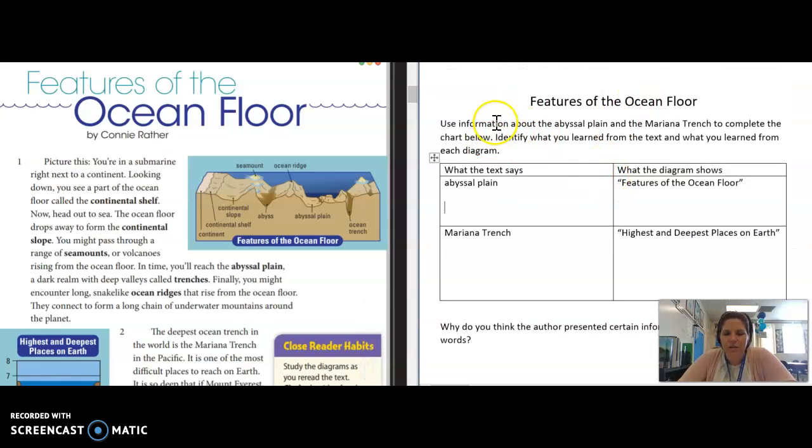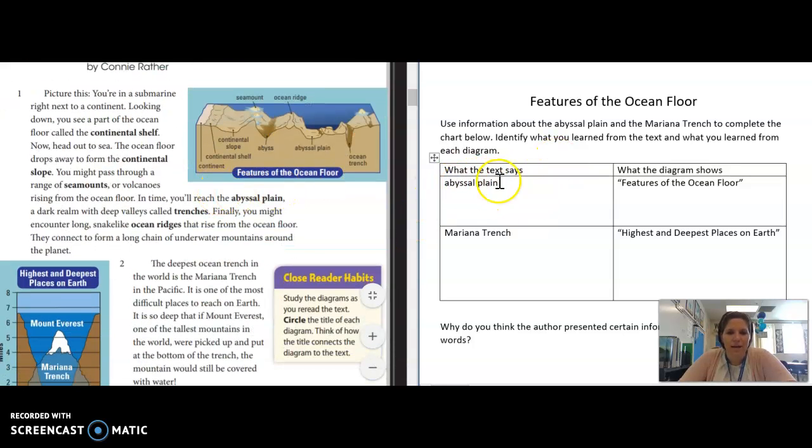Let's see the directions here. You were focused on two areas and then what the diagrams show. It said to use information about the abyssal plane and the Mariana Trench to complete the chart below. Identify what you learned from the text and what you learned from each diagram. So when we went here to this section, all about this plane, I can see that in bold words right here. So when I go to the text, I could almost copy and paste what it said about the abyssal plane.